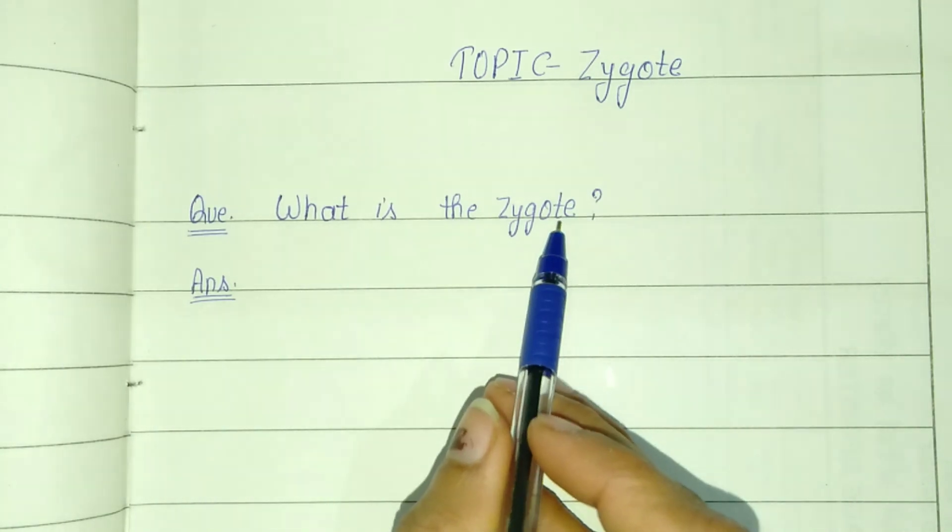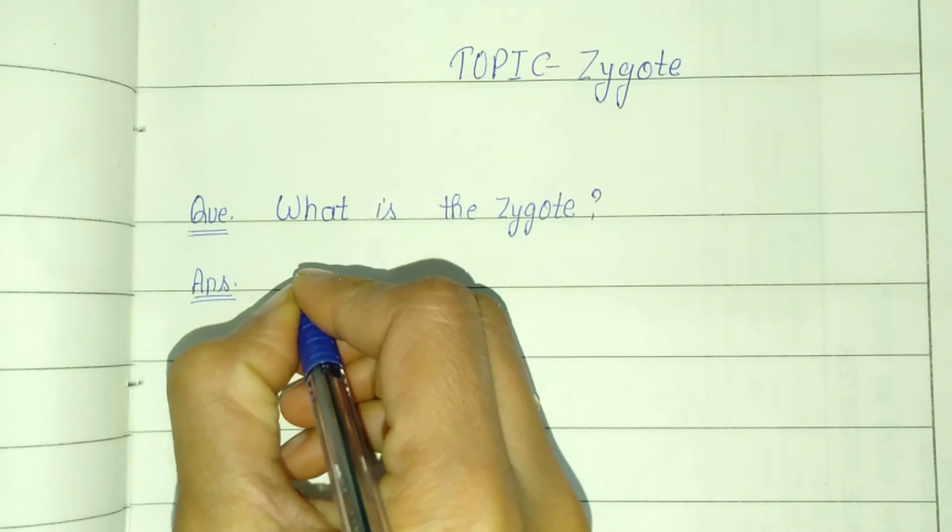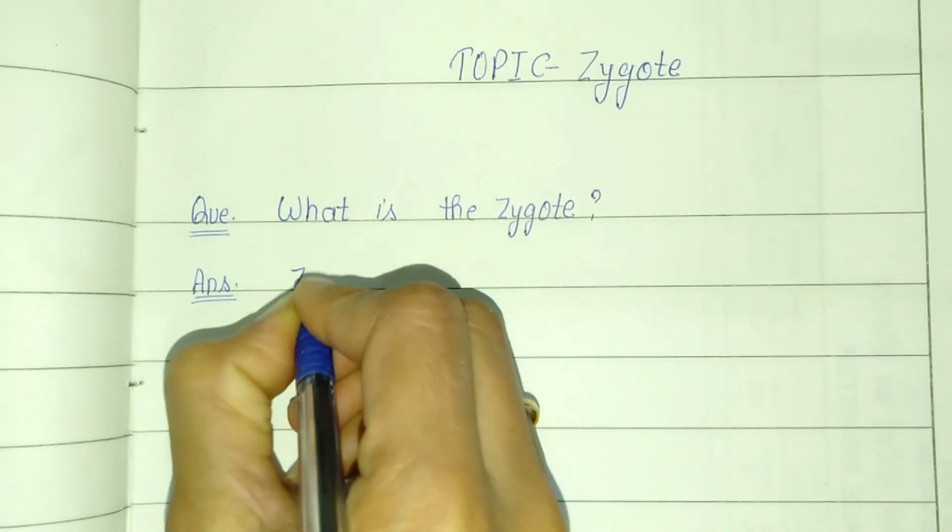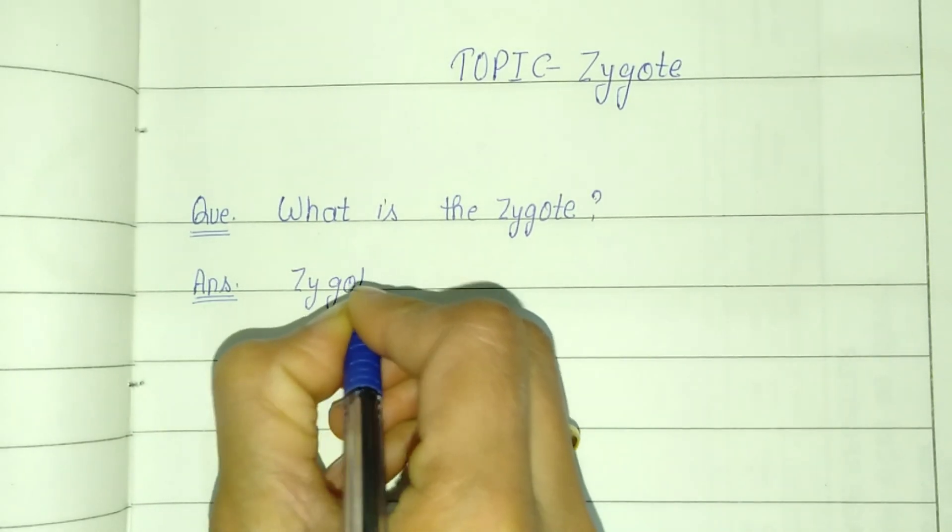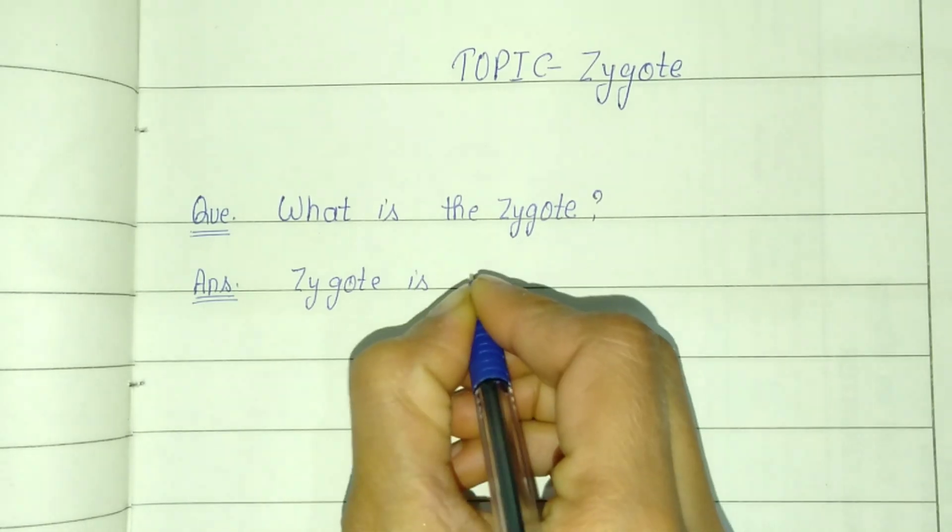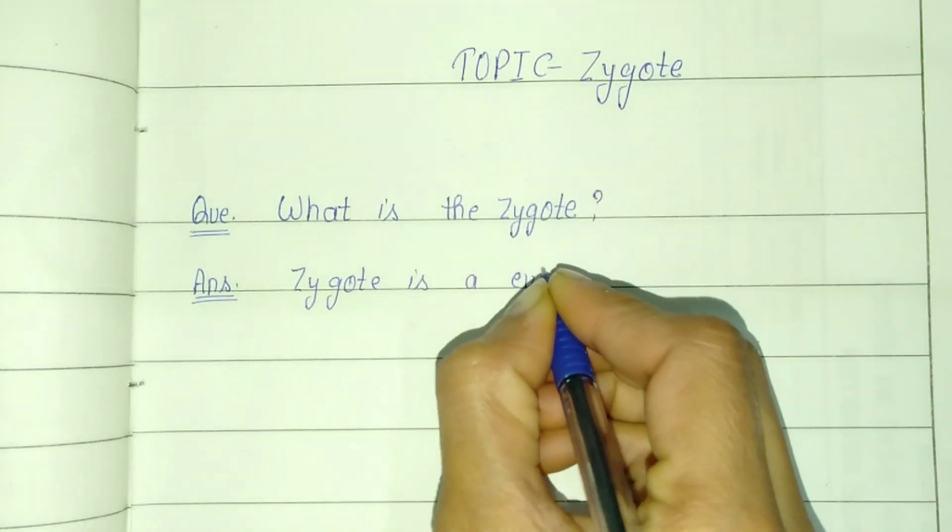What is the zygote? The zygote is a eukaryotic cell.